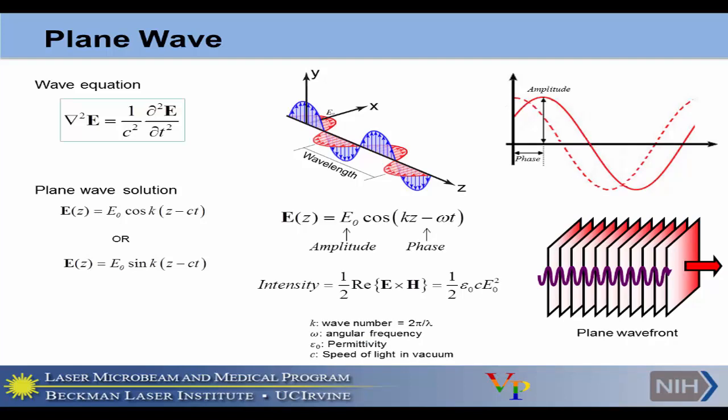When you consider the plane wave, it has an amplitude and phase. The amplitude is the maximum value of the wave, and the phase is the phase shift of that wave. For this kind of wave, we can calculate the intensity — intensity is the cross product of the electric field and the magnetic field, and we can represent it as (1/2) ε₀c E₀². So intensity is proportional to E₀², meaning intensity is proportional to the square of the electric field amplitude, and we can use the electric field for our modeling.